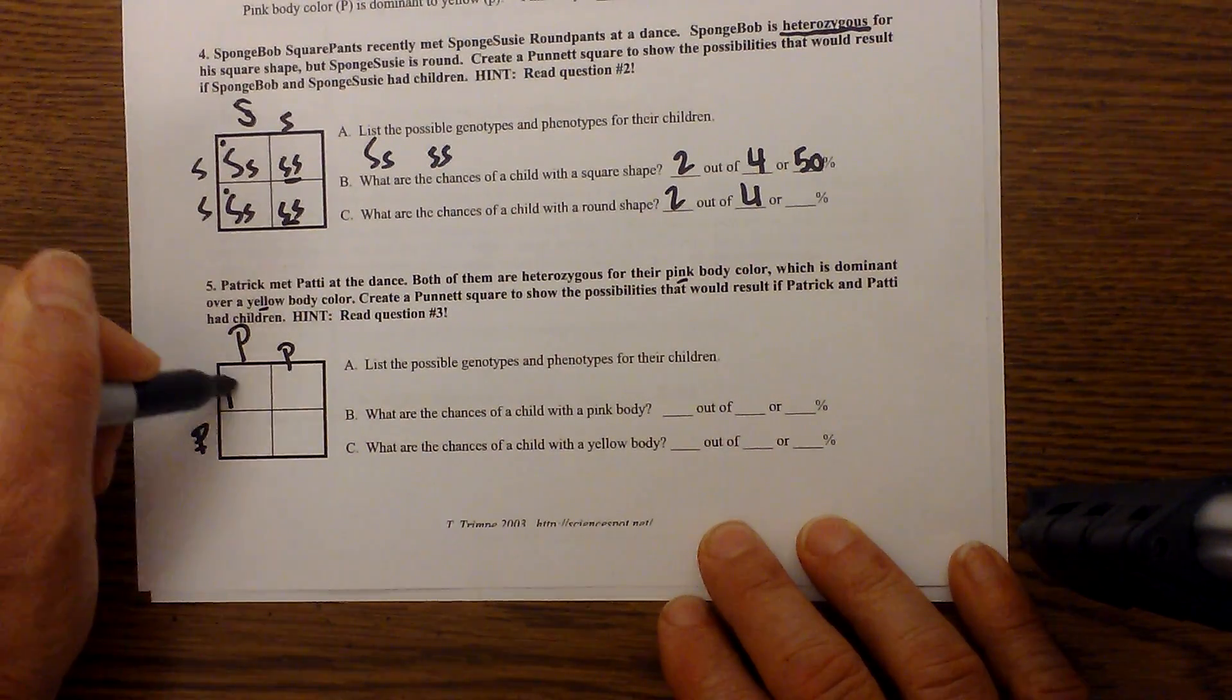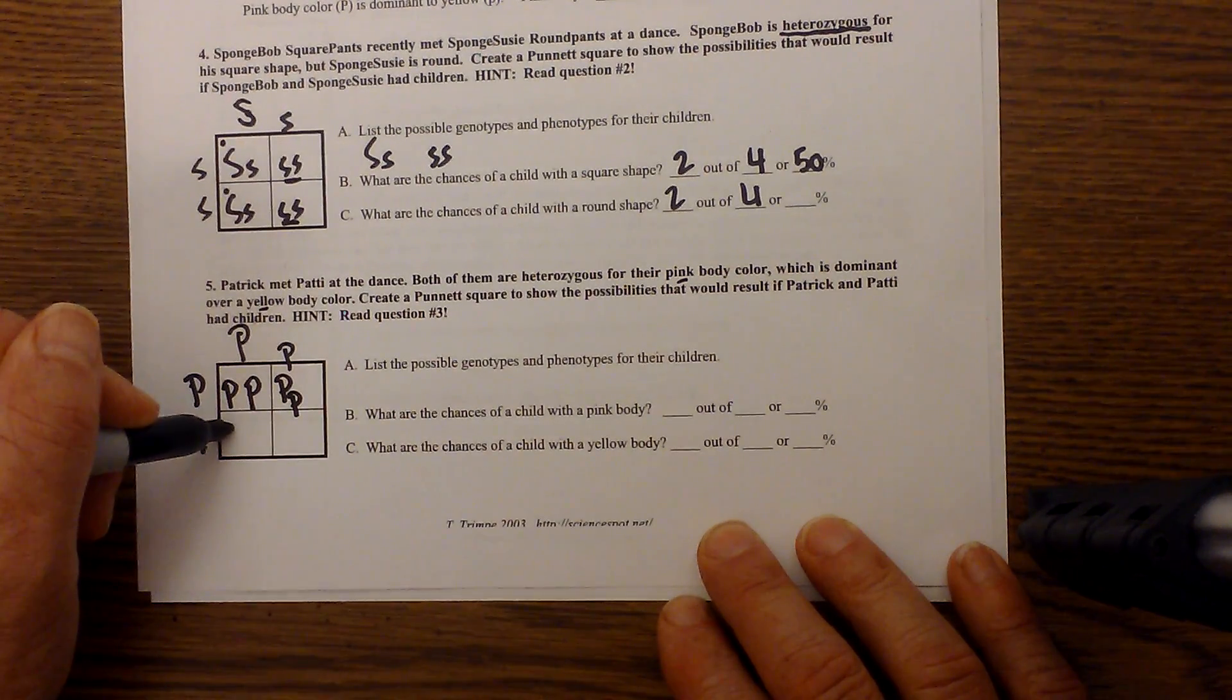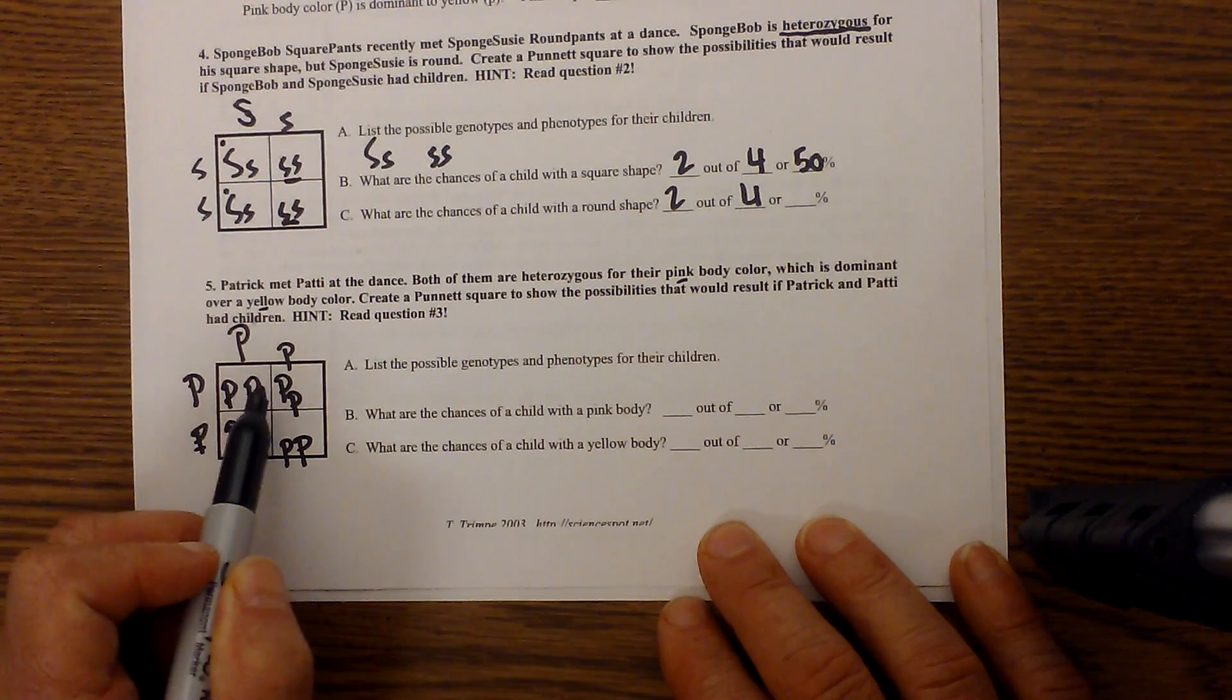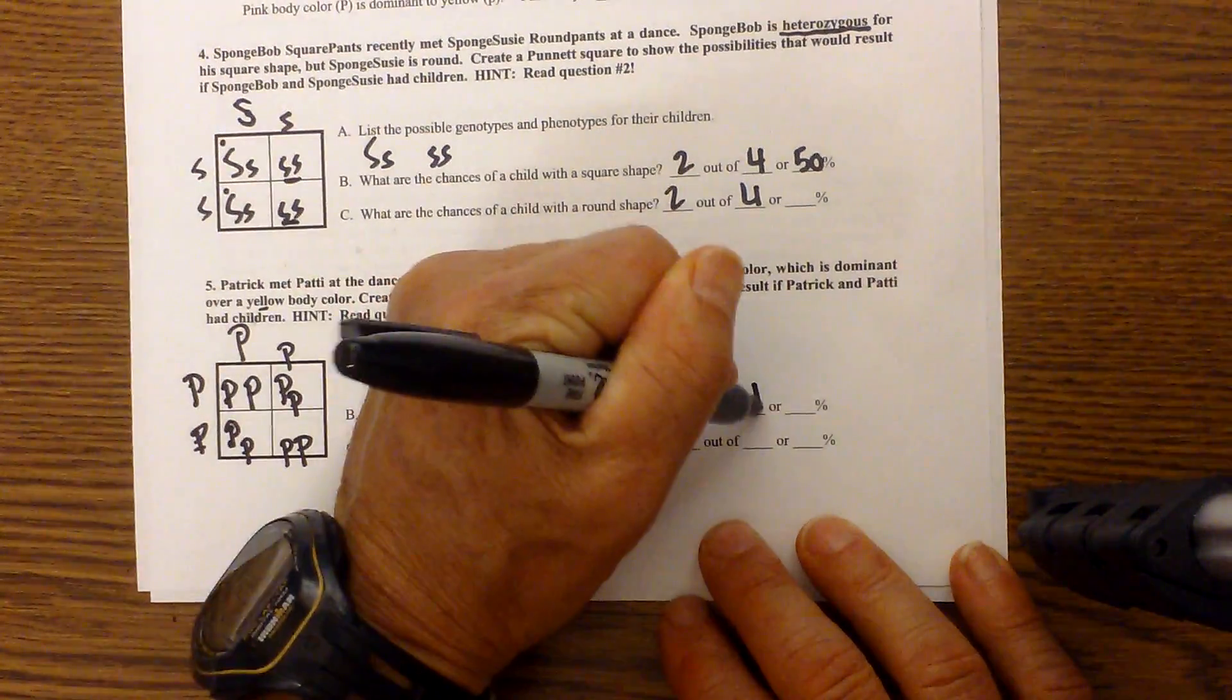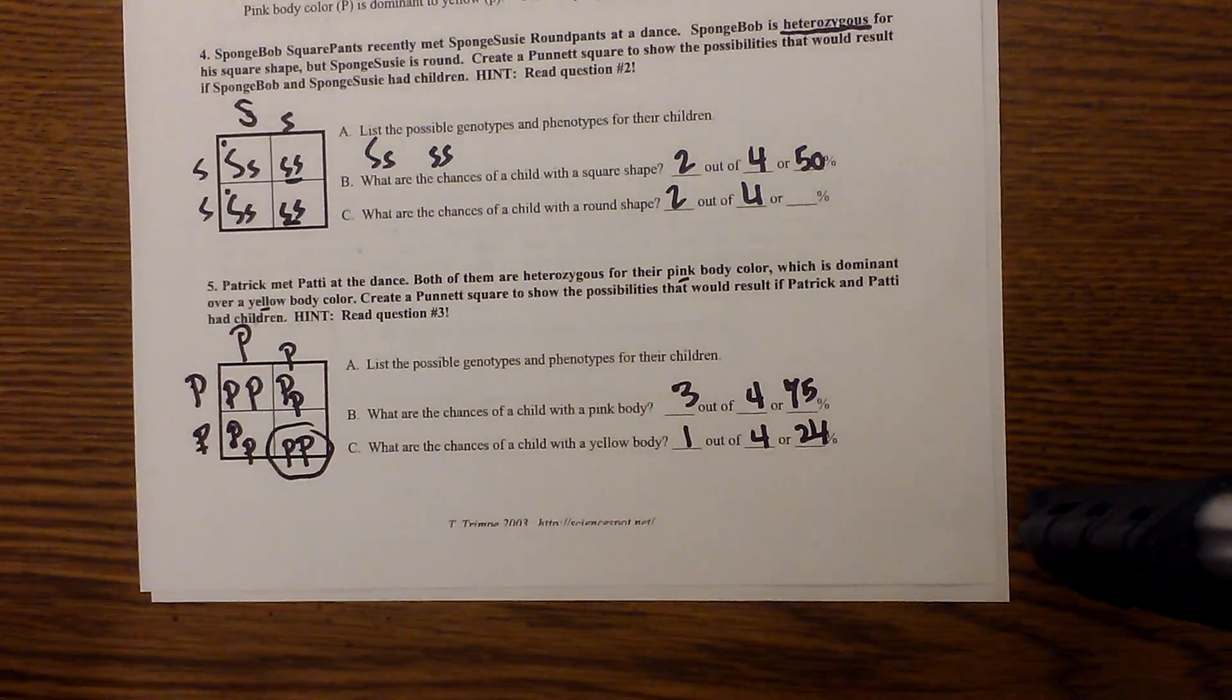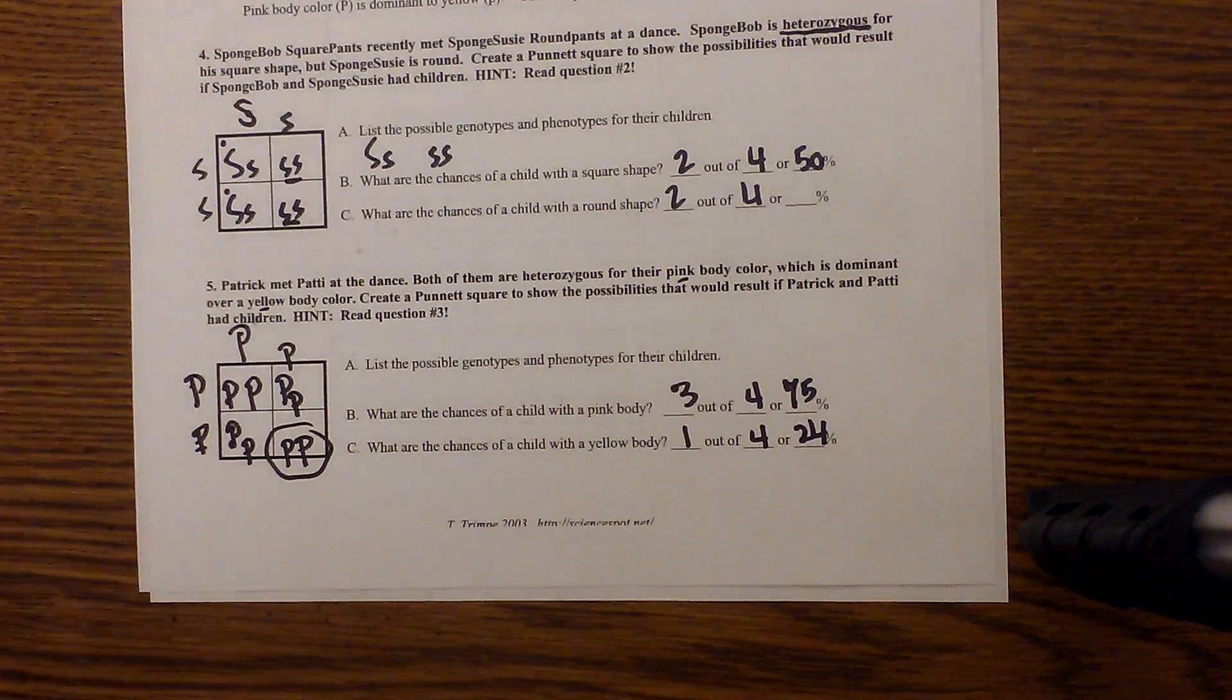So I'll fill in the box. And the way I fill in the box, I take this P here, this P there. And there's no written law, but usually you write the capital letter in front of the lowercase letter. And then we have big P, little P. And then we have... so we have a capital letter here. So that will be pink. This will be pink because of the capital letter. This will be pink because of the capital letter. So we'll have three out of four, or 75%. And then we will have one out of four, or 25%, that it will be yellow because the only way you're going to get a recessive trait is with two recessive alleles. So I hope that helps with some Punnett squares.